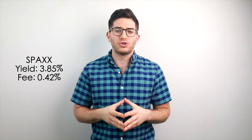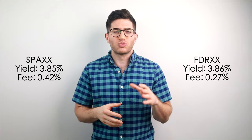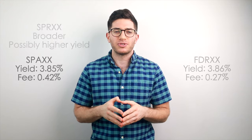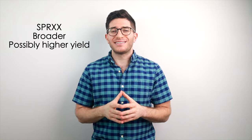Let's talk about SPAXX and FDRXX. These are money market funds, and for all intents and purposes, they're the same thing. You'll probably see both as options if you have a taxable brokerage account with Fidelity. FDRXX is basically just an older version of SPAXX. They both hold ultra-short-term instruments like CDs and commercial paper that are considered cash equivalents. At the time of this video, SPAXX has a yield of 3.85% and a net expense ratio of 0.42%, while FDRXX has roughly the same yield of 3.86% and a net fee of 0.27%.